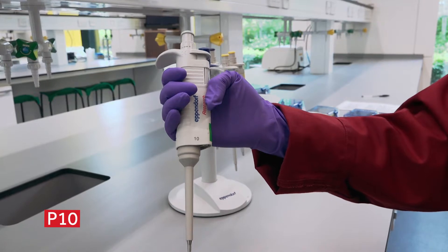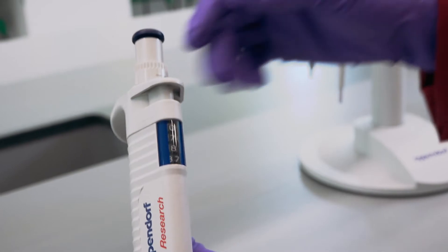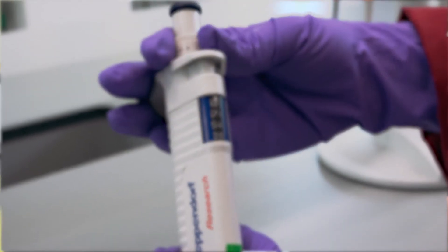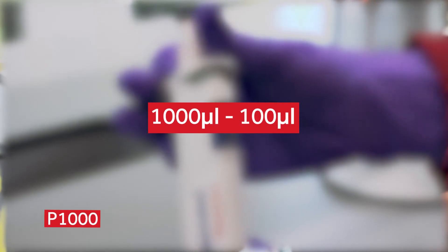How would you know which is the best one to use? Pipettes work best between their maximum value and 10% of that maximum value. For example, a P1000 should be used to pipette between 1000 and 100 microliters.